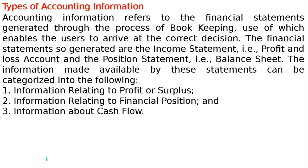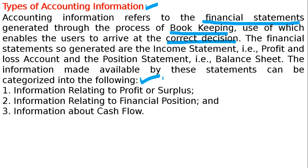Accounting information refers to financial statements. जो accounting information होता है, यह कितने type का होता है? Accounting information refers to the financial statements generated through the process of bookkeeping. यह bookkeeping का जो process है, यह financial statement यानि profit and loss account और balance sheet generate करता है. Use of which enables the users to arrive at correct decisions — यानि budgeting, control यह सब इसके अंदर होता है. The financial statements so generated are the income statement and position statement यानि balance sheet. The information made available by these statements can be categorized into three categories.